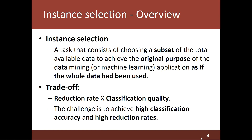In the context of machine learning and data mining, instance selection is a task that consists of choosing a subset of the total available data to achieve the original purpose of the application as if the whole data had been used. In general, every approach of instance selection should face a trade-off between the reduction rate of the dataset and the classification quality. The challenge in this task is to achieve high classification accuracy and high reduction rates.